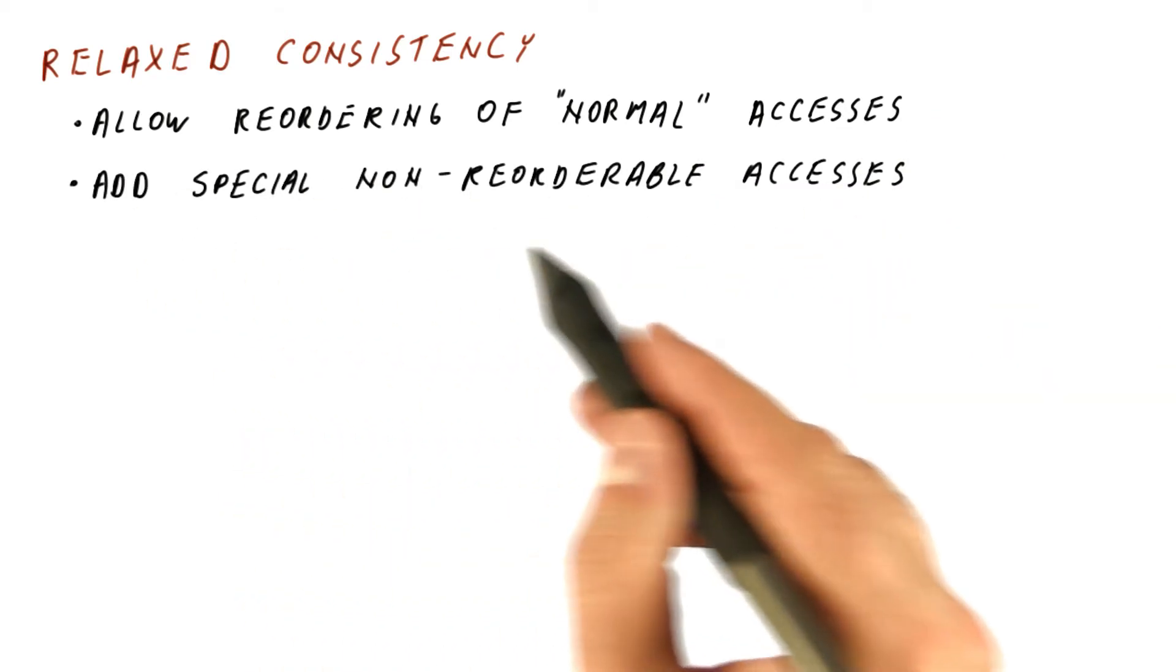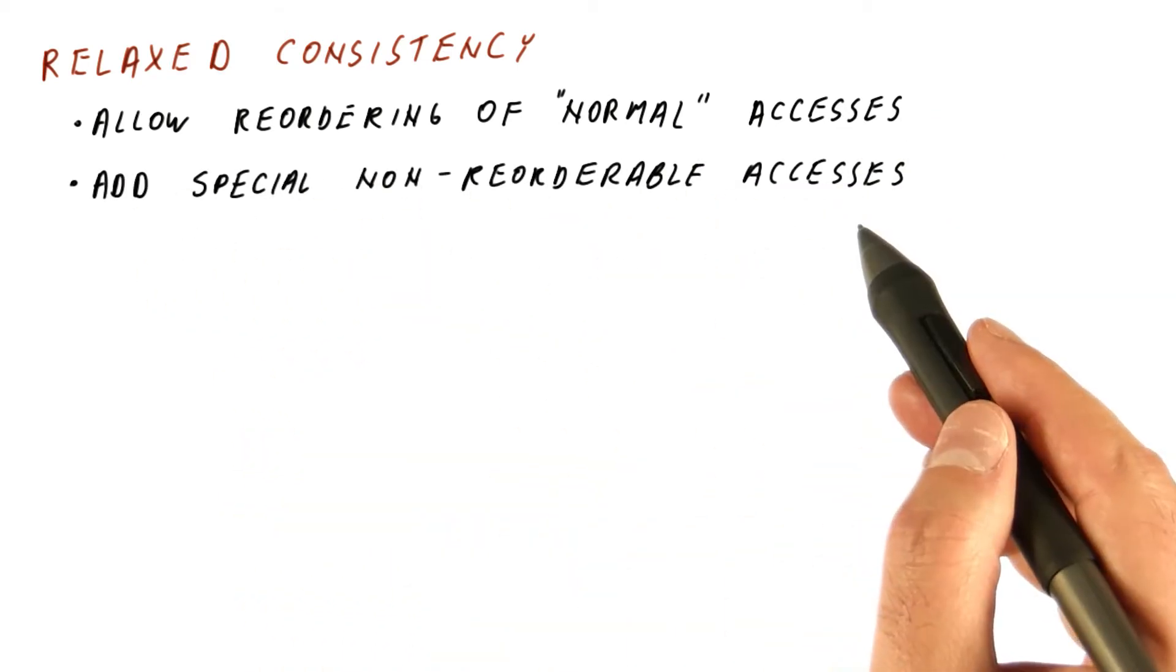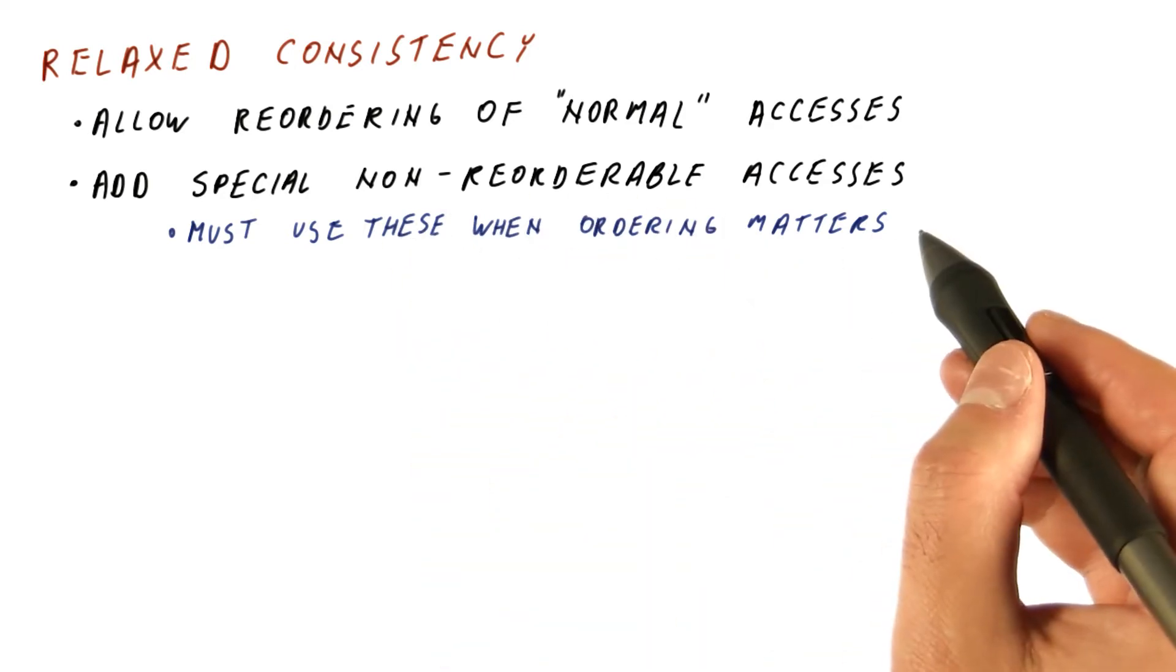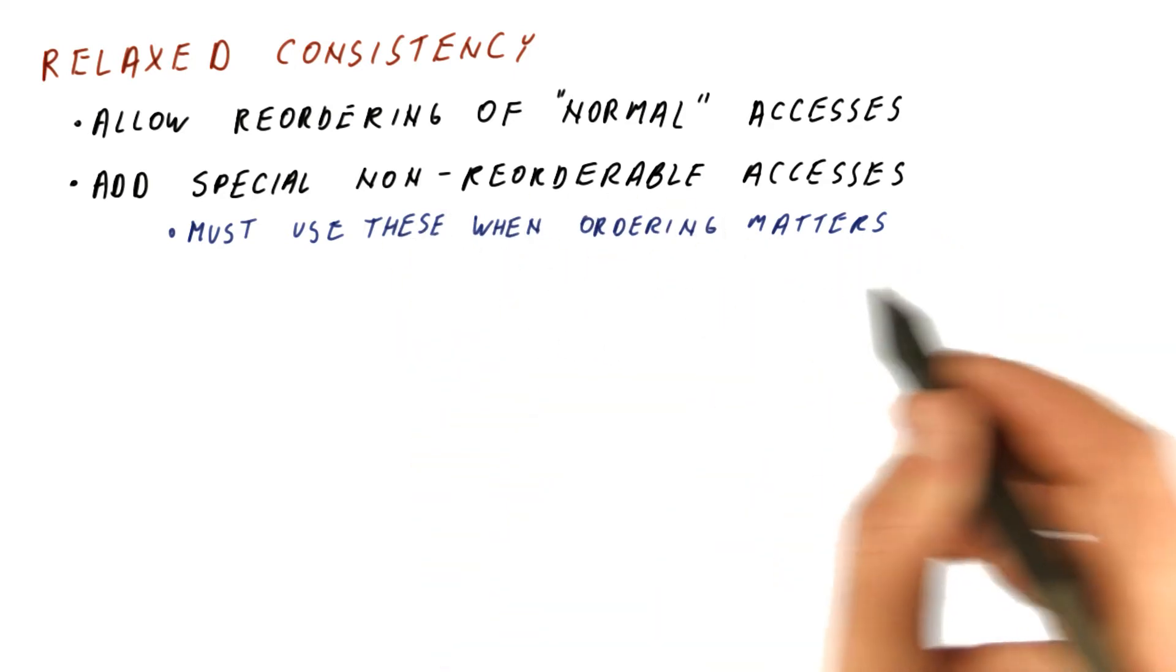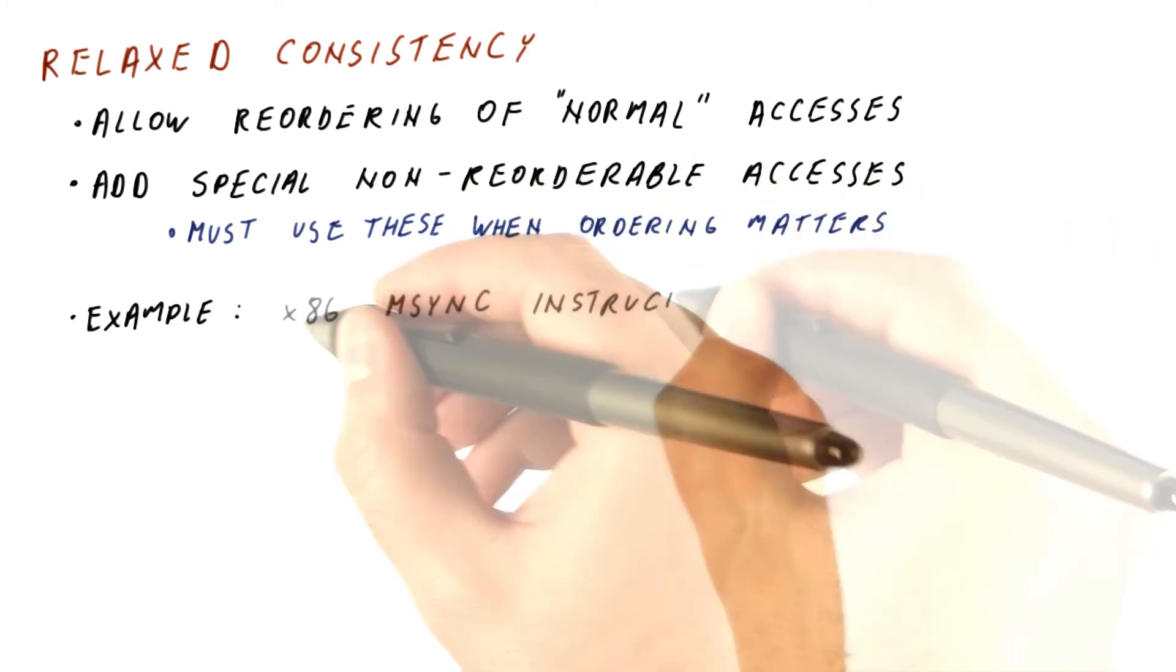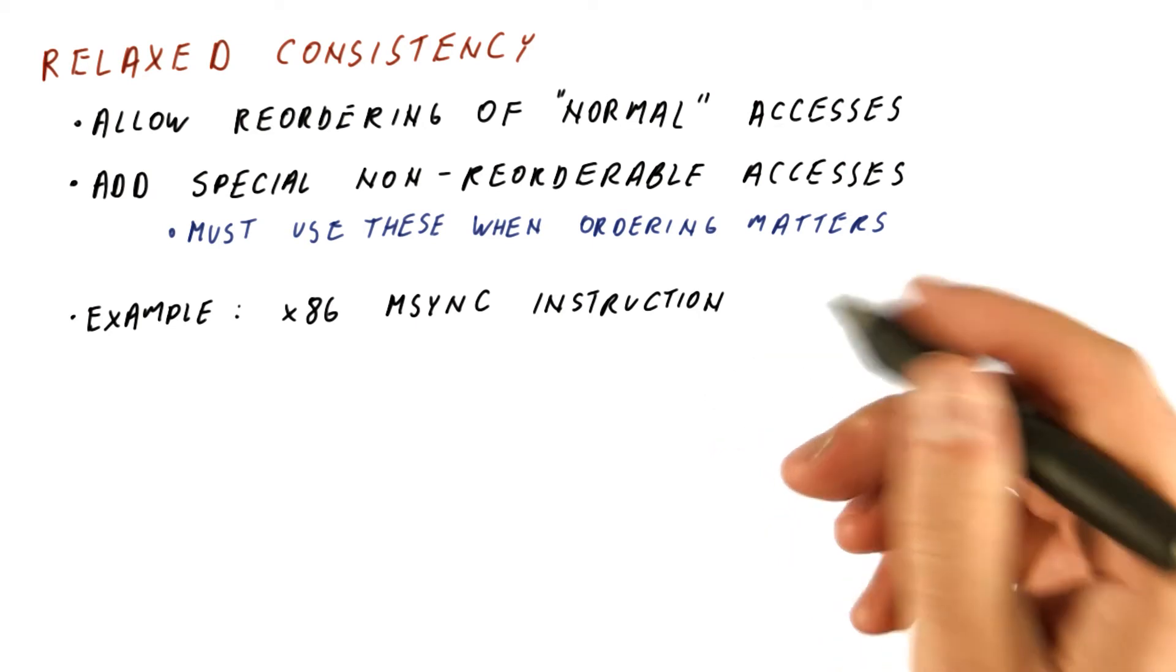But then we add special non-reorderable accesses, and the programmer must use these non-reorderable accesses when ordering in the program matters. An example of such non-reorderable accesses is the x86 mSync instruction.